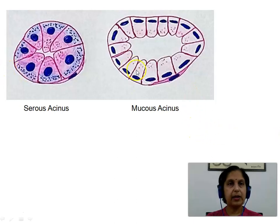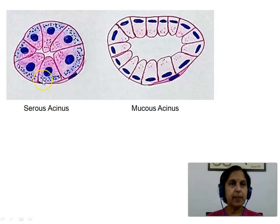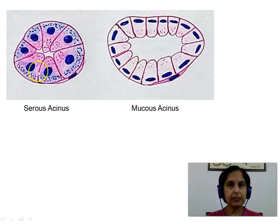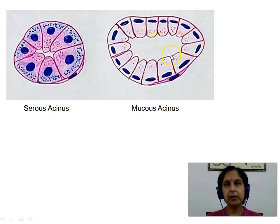Here we see both pictures for a comparative view. The serous acinus is smaller in size compared to the mucous acinus. The serous acinus has large pyramidal columnar lining cells with a rounded nucleus, while the mucous acinus has pyramidal columnar or cuboidal cells with a flat elongated nucleus. The lumen is very small or hardly appreciated in the serous acinus, while the mucous acinus has a well-defined wide lumen.